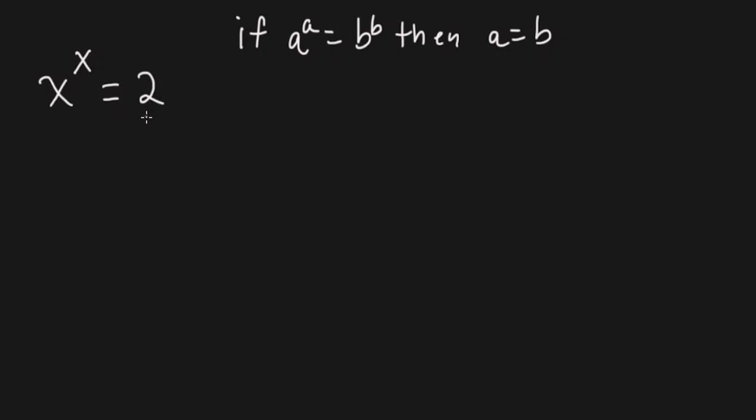So what number to itself will give you 2? Well, 1 to the 1 will just give you 1, and 2 to the 2 will give you 4. So it lies somewhere in between 1 and 2. But what exactly? Well, you can guess at it, or we can use something called